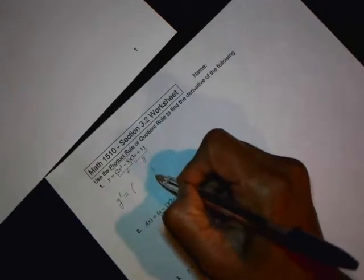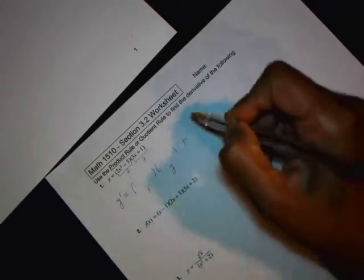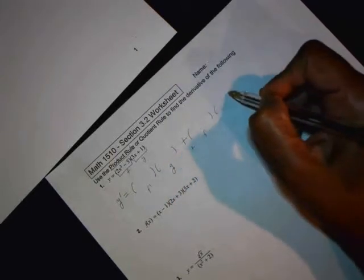as per the product rule, take the derivative of the first, f prime, keep g as it is, plus, in the product rule it's a plus, keep f as it is, and then multiply it with g prime.